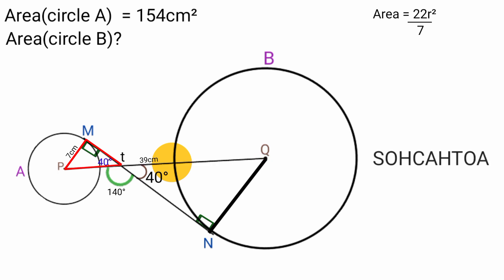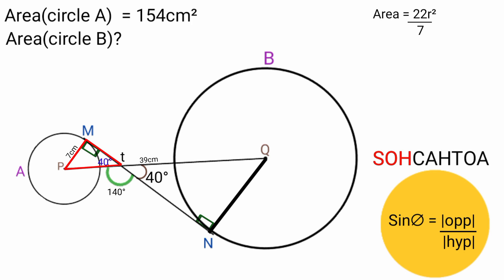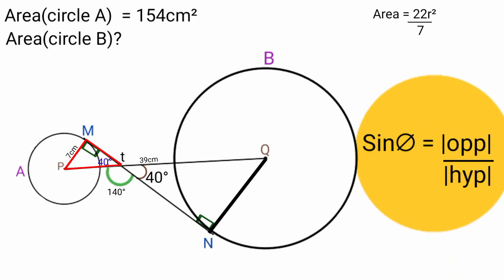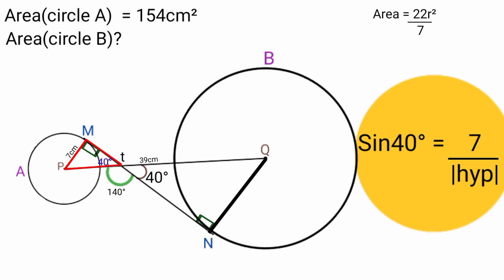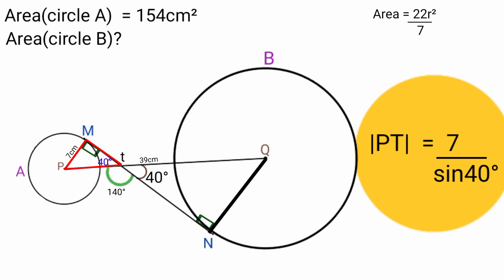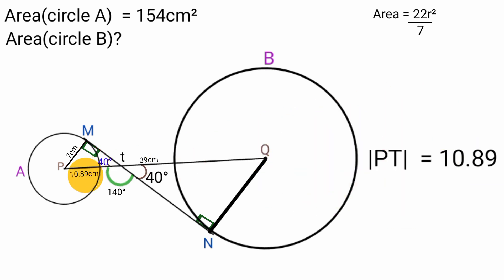Using SOH-CAH-TOA, from this angle here, the side of length 7 is opposite because it faces the 40 degree angle, and line PT is the hypotenuse because it faces the right angle. So sin theta equals opposite over hypotenuse; theta is 40 degrees, opposite is 7, and hypotenuse is line PT. So sin 40 degrees equals 7 over line PT. Making line PT the subject: line PT equals 7 over sin 40 degrees, which equals 10.89 cm.